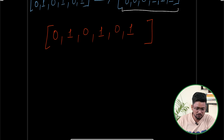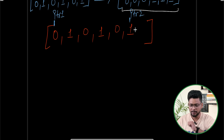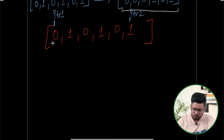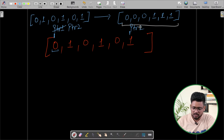To solve this, we will use two pointers — pointer 1 and pointer 2. We place pointer 1 at the leftmost side of the array and pointer 2 at the rightmost side. The approach is very simple: if pointer 1 is at a 0, we increase pointer 1 to the right side. If pointer 2 is at a 1, we decrease pointer 2 to the left side.